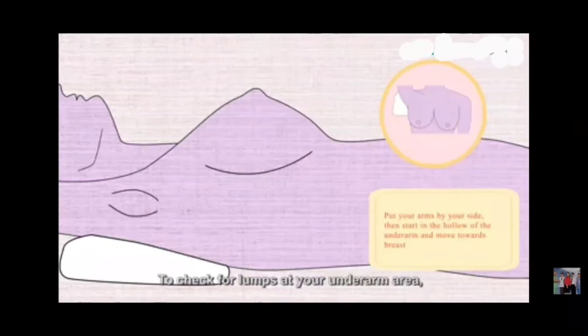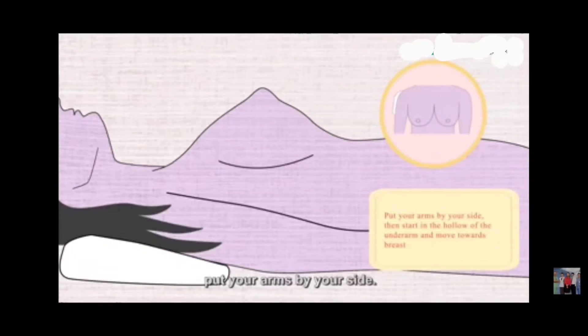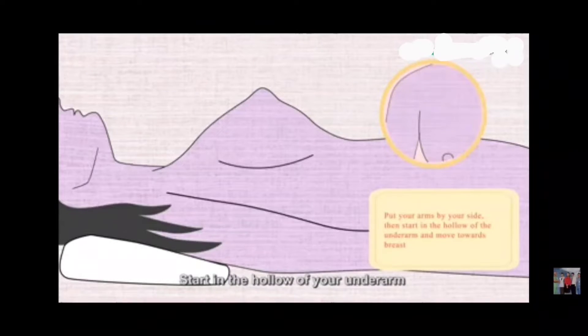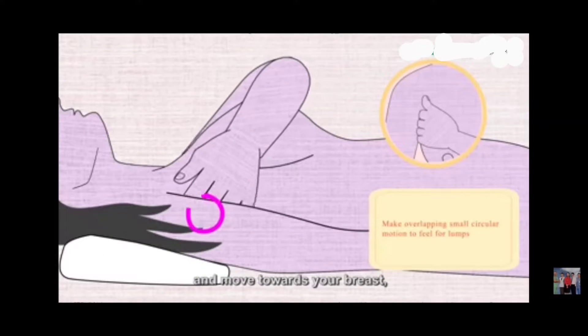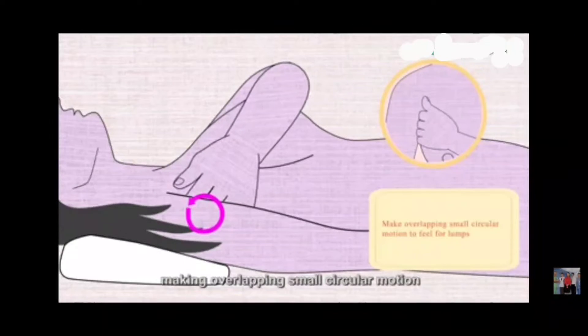To check for lumps at your underarm area, put your arm by your side. Start in the hollow of your underarm and move towards your breast, making overlapping small circular motions.